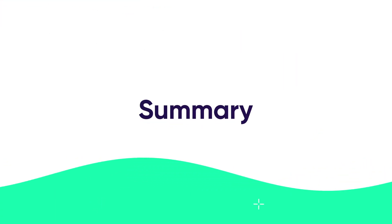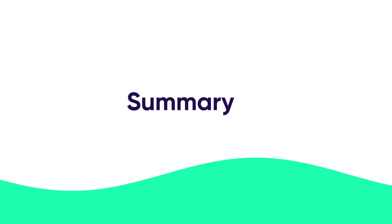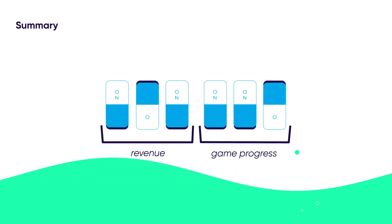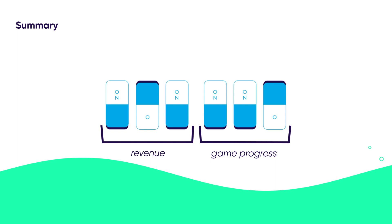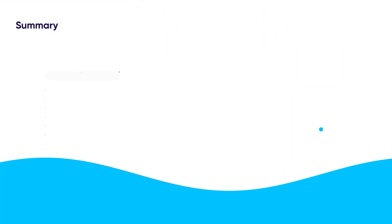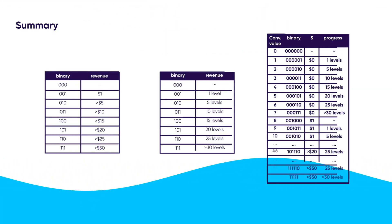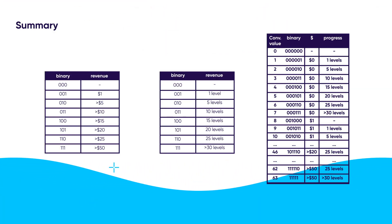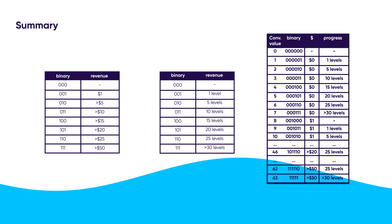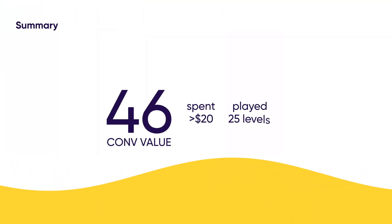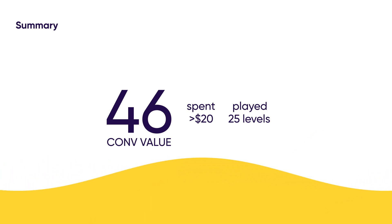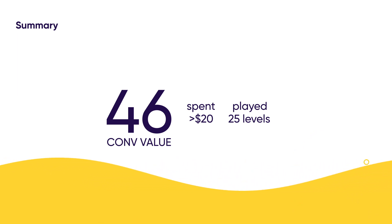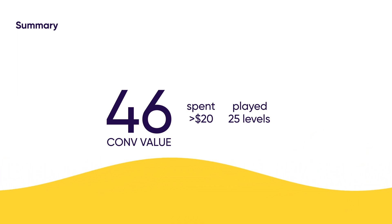Let's summarise the key points. First, you need to define how you want to use the 6 bits available to you. Then, you'll want to make friends with the binary logic by mapping all of your conversion values. And finally, but most importantly, start analysing campaigns, extracting insights, and optimising your conversion values and user acquisition strategy.